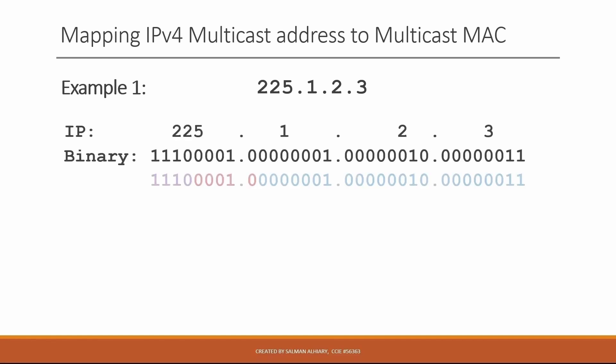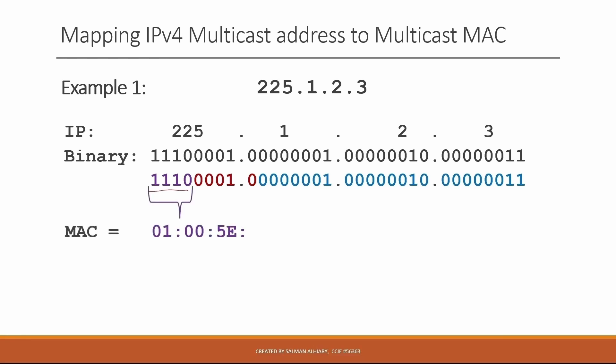Note that the first four bits are always 1110 for any given multicast address. Step two: replace the first four bits of the IP address with the six hexadecimal digits 01:00:5E. We bring this 1110 in binary and replace it in the MAC address to be 01:00:5E.